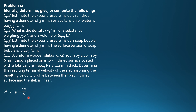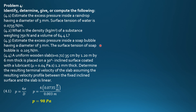This excess pressure is also gauge pressure — the difference between inside pressure and outside pressure, which is atmospheric pressure. So it is gauge pressure. So, 4 times 0.0735 N per meter divided by diameter in meters, 0.003 meter. The unit is N per meter squared, or Pascals. So, excess pressure is 98 Pascals.